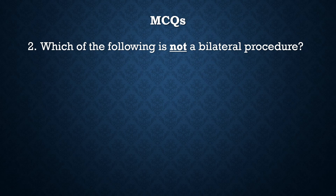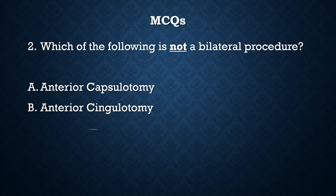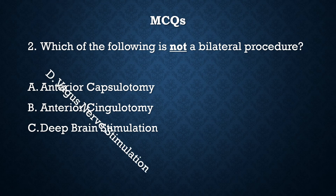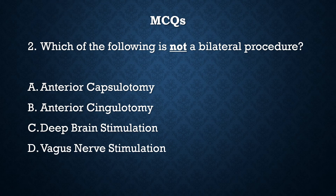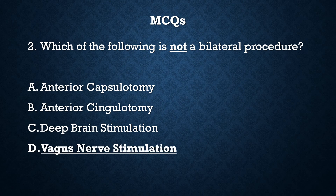Question 2: Which of the following is not a bilateral procedure — anterior capsulotomy, anterior cingulotomy, deep brain stimulation, or vagus nerve stimulation? The correct answer is D. Vagus nerve stimulation is not a bilateral procedure — it is done on the left side. The other three procedures are bilateral.